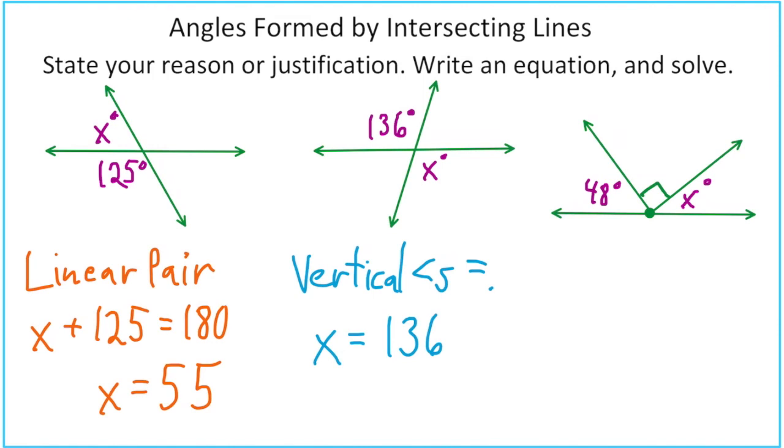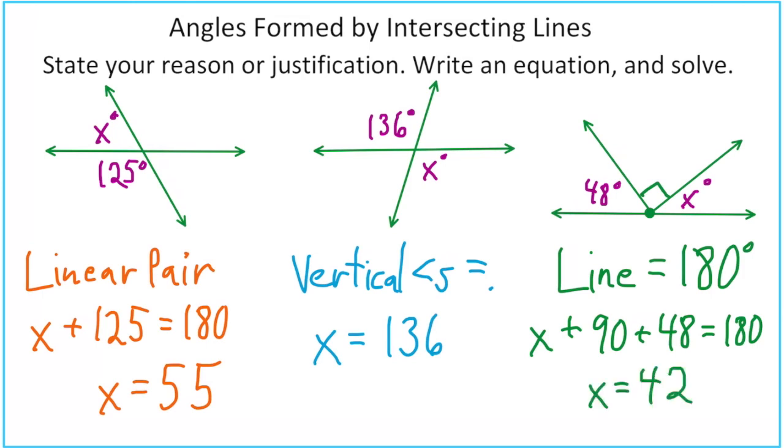On the last problem, you should use line equals 180. You can't say that that's a linear pair, because there's three angles involved. This would mean that you go ahead and write an equation, x plus 90 plus 48 equals 180 degrees. And then when you solve it, you end up with x equals 42.